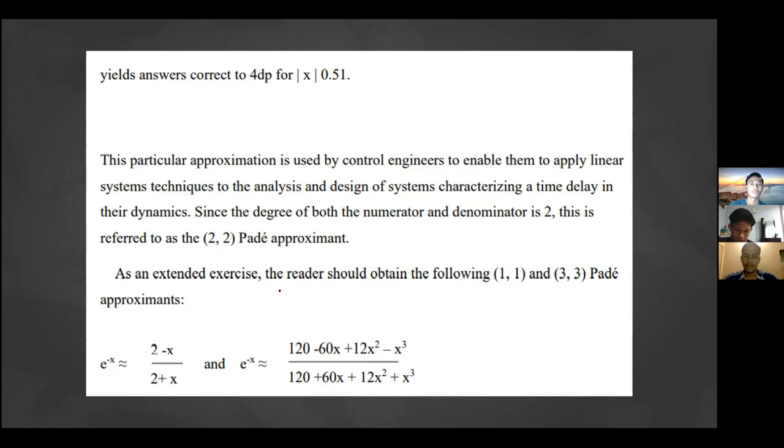As an extended exercise, the reader should obtain the following 1/1 and 3/3 Padé approximations. For 1/1: e^(-x) ≈ (2 - x) / (2 + x). For 3/3: e^(-x) ≈ (120 - 60x + 12x² - x³) / (120 + 60x + 12x² + x³).